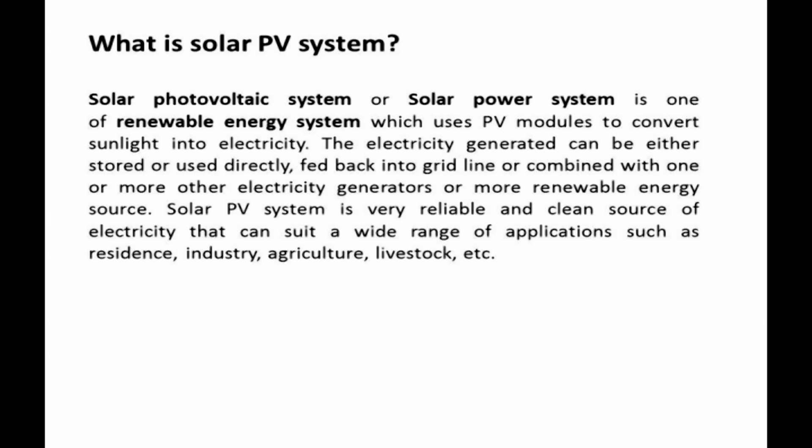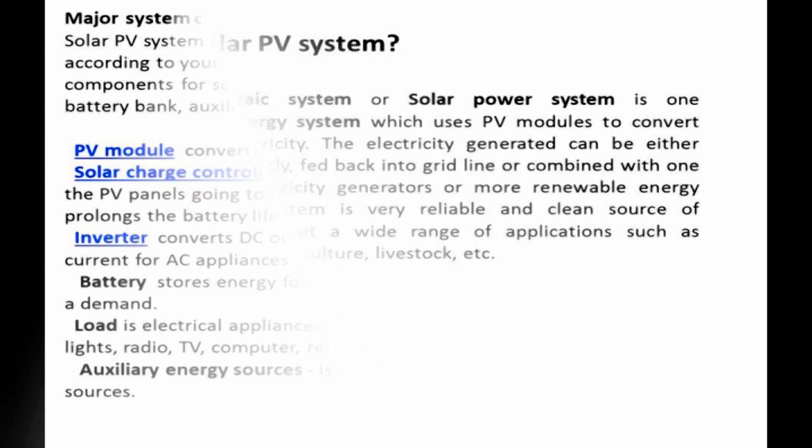Before embarking on designing, first try to understand what a solar PV system is. A solar photovoltaic system, or solar power system, is a renewable energy system which uses PV modules to convert sunlight into electricity. The electricity generated can be stored, used directly, fed back into the grid, or combined with one or more other electricity generators or renewable energy sources. Solar PV systems are a very reliable and clean source of electricity that can suit a wide range of applications such as residential, industrial, agricultural, and livestock uses.